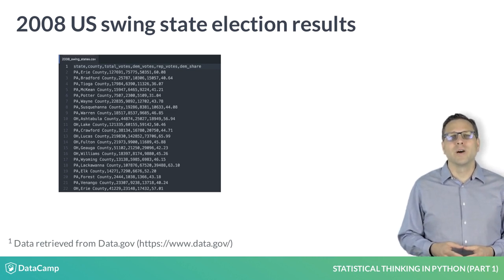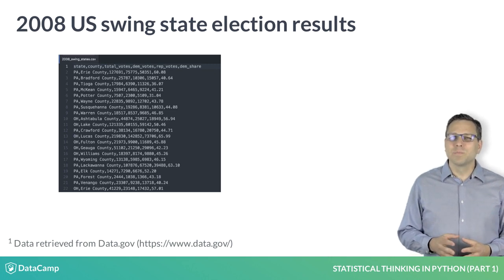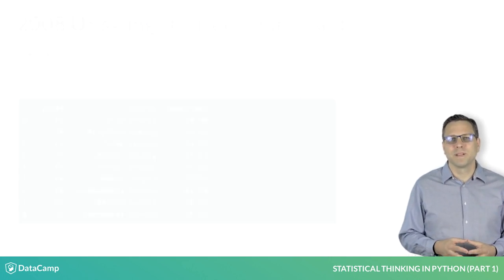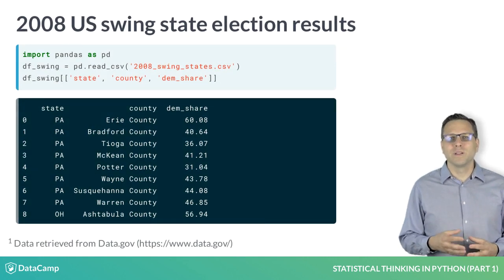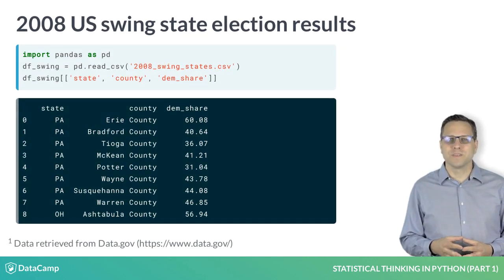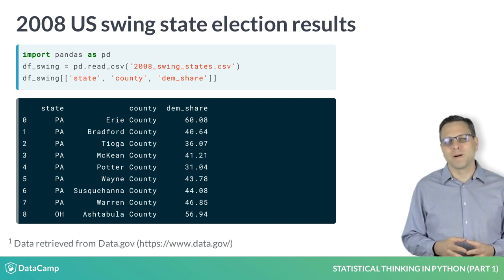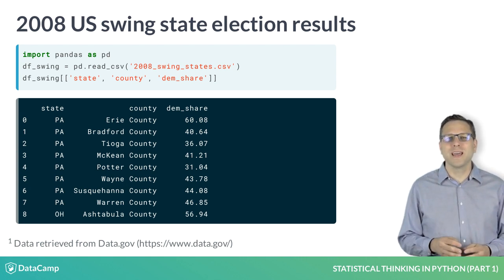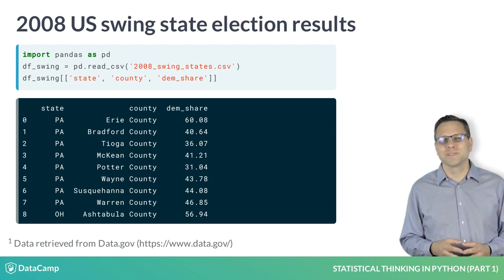This is how they look when I open the file in my text editor. They are a little prettier if we look at them in a pandas data frame. In this case, we are only looking at the columns of immediate interest: the state, county, and share of votes that went to Democrat Barack Obama. Now we could stare at these numbers, but I think you'll agree that it is pretty hopeless to gain any sort of understanding from doing this.